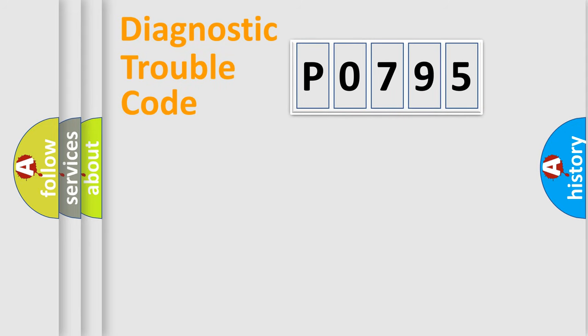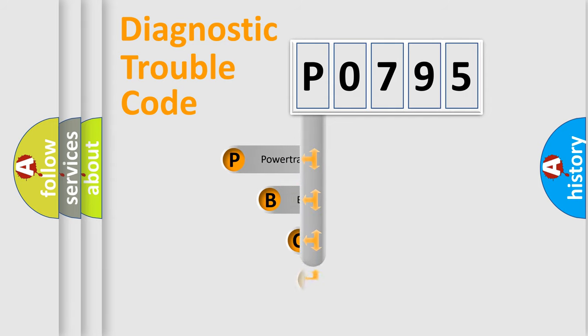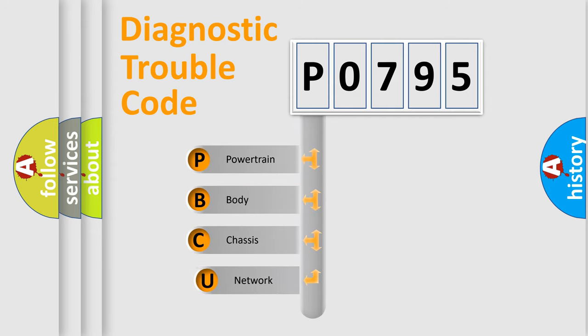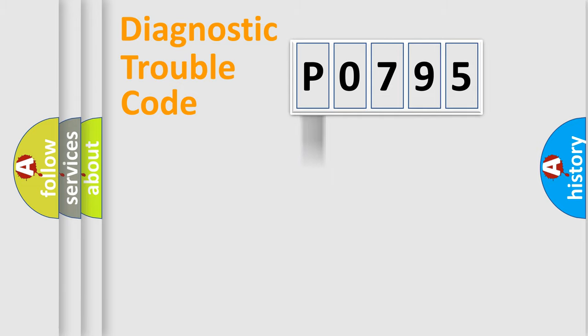Let's do this. First, let's look at the history of diagnostic fault code composition according to the OBD2 protocol, which is unified for all automakers since 2000. We divide the electrical system of an automobile into four basic units: Powertrain, Body, Chassis, and Network.